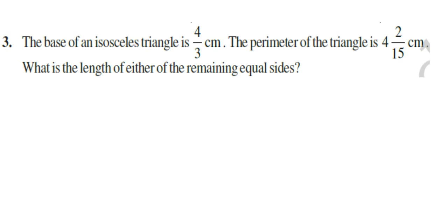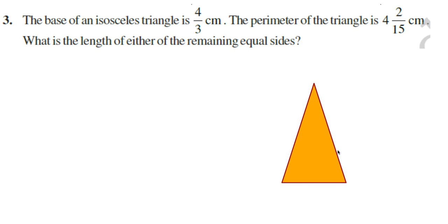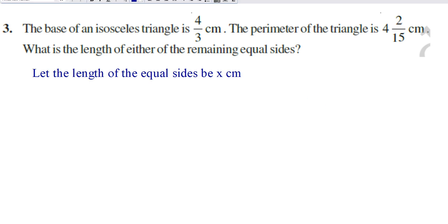The third question is: the base of an isosceles triangle is 4/3 centimeters. The perimeter of the triangle is 4 and 2/15 centimeters. What is the length of either of the remaining equal sides? An isosceles triangle means two sides are equal. The equal side is not given — you have to find it. Let x be the equal side, so both equal sides are x and the base is 4/3. Let the length of the equal sides be x centimeters.